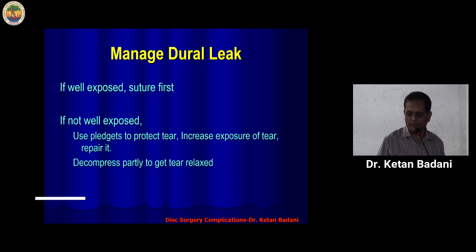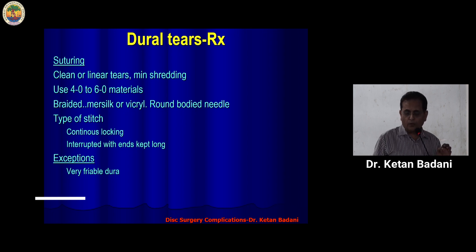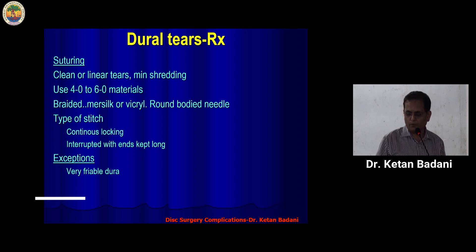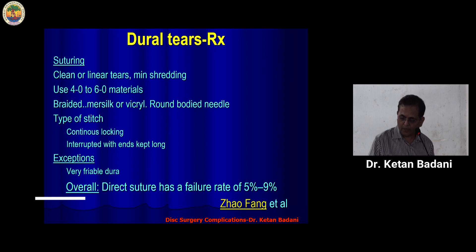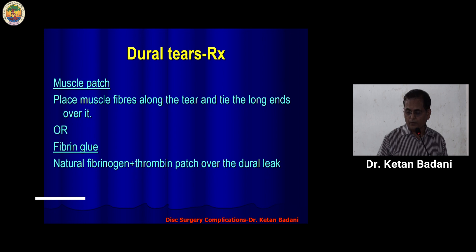Once I can push the roots inside easily, I do the repair. Usually you require a braided material like Mersilk or Vicryl 4-0 to 6-0 — I normally prefer to use 5-0 Mersilk for these sutures. For a long straight tear, I use continuous locking; for a short tear, I use interrupted sutures and keep them long to later tie a muscle patch. Very friable dura may not allow suturing and you might have to resort to other methods. Overall, even direct suturing has been shown to have a failure rate of over 5 to 9%.